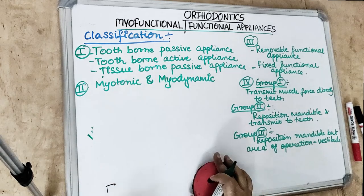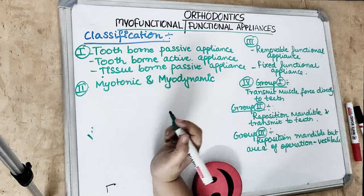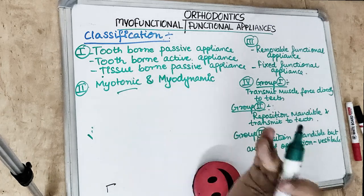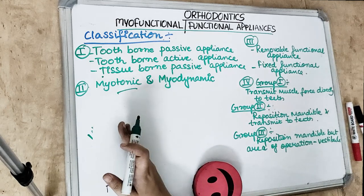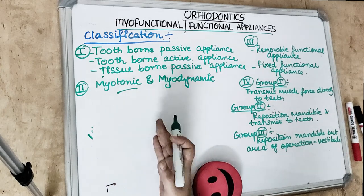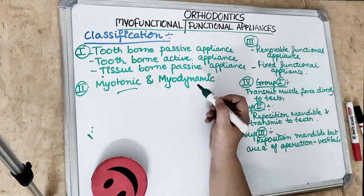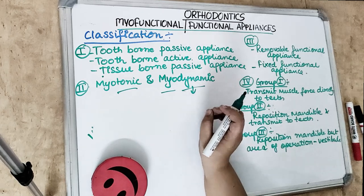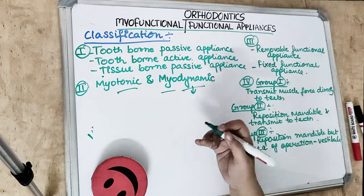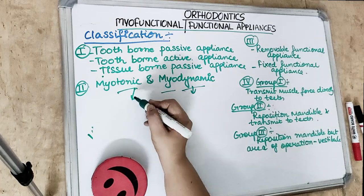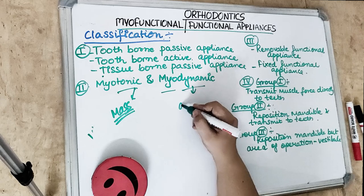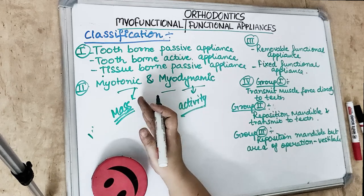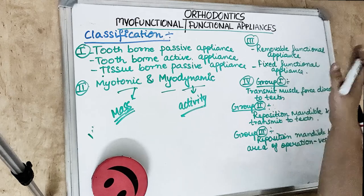Myotonic and myodynamic appliances: 'myo' means muscle and 'tonic' means tonicity. Myotonic appliances depend on the muscle mass for their action — if there is good muscle mass, the action is good. Myodynamic appliances depend on the muscle activity for their function. So tonic appliances depend on the mass of the muscle, while dynamic appliances depend on the activity of the muscle.